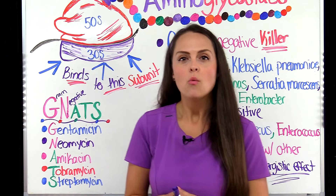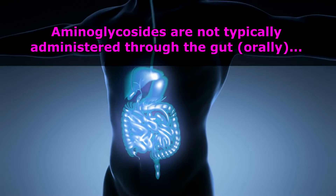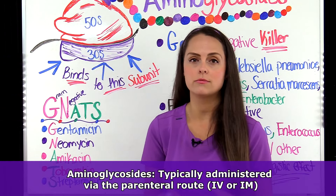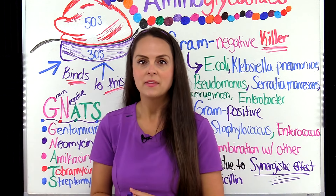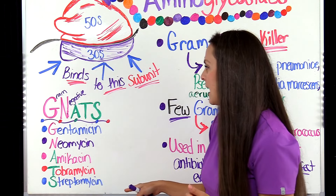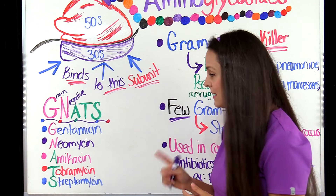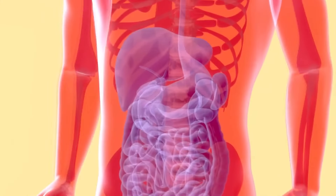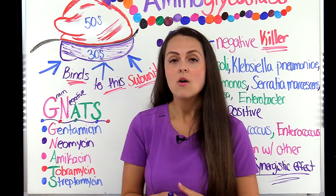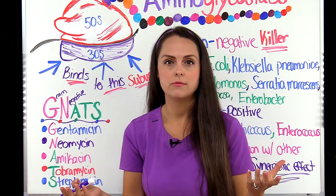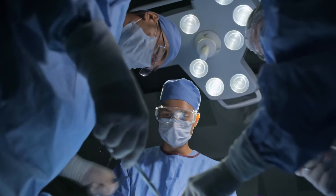How are aminoglycosides administered? This group of medications doesn't like to be absorbed through the gut, so we don't give them orally — rather via the parenteral route, so IM or IV. There are exceptions: tobramycin can be given via inhalation to patients with cystic fibrosis who have a lung infection, or neomycin can be given orally to target certain bacteria in the gut — for instance, to help bring down ammonia levels in hepatic encephalopathy, or to prep the bowel before surgery.